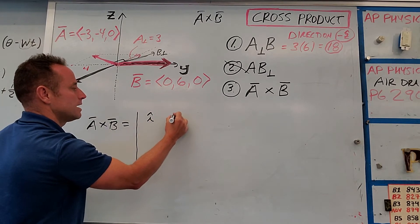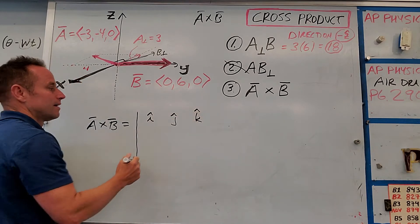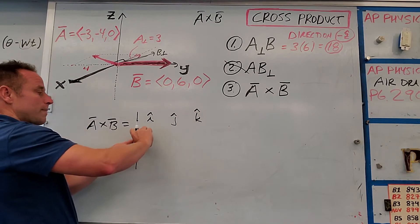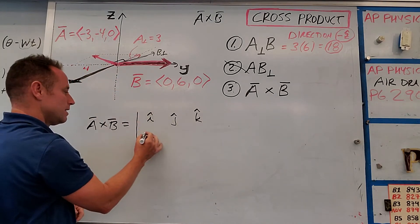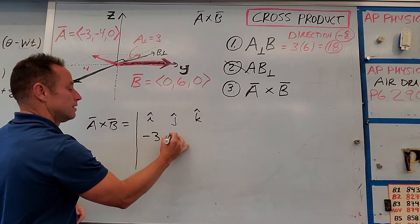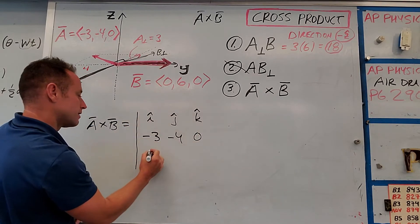And what you do is you write the unit vectors across the top, I hat, J hat, K hat, or X, Y, Z, either way. And the order matters. You put the components of A in this row. So our A vector is minus 3, minus 4, 0. And our B vector is 0, 6, 0.